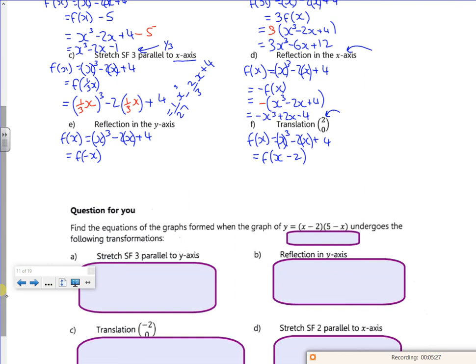Let's have a look at E. So that's a reflection in the x-axis. So I'm replacing x with minus x now. So I've got a minus x in the bracket. So I've got minus x all cubed is minus x cubed. So be careful with that. Minus minus is a plus.